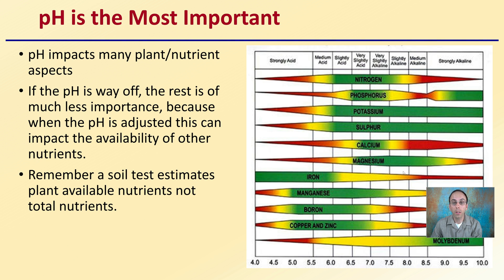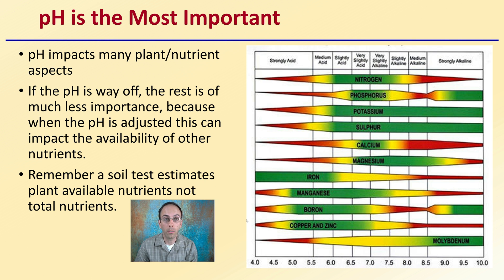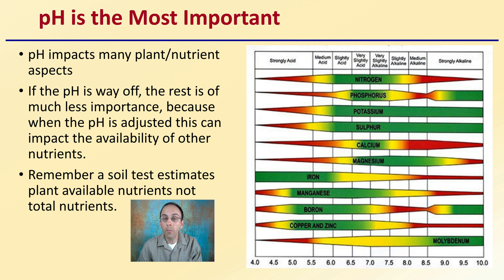pH is the most important factor. I know it's always hard to put something as the most important, but I would say looking at your pH is definitely very high, if not the most important. Why? Because it impacts many plant and nutrient aspects. If the pH is way off from your target levels, the rest is much less important, because when the pH is adjusted, this can impact the availability of other nutrients.